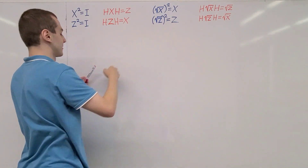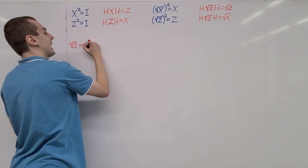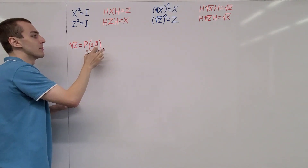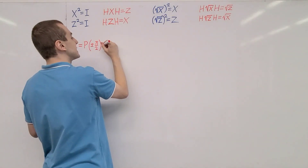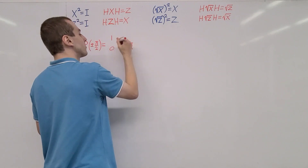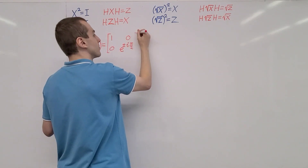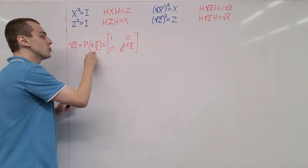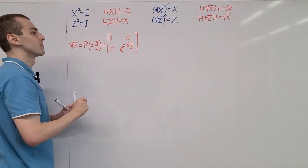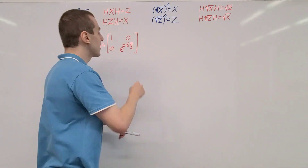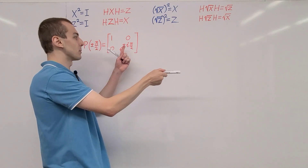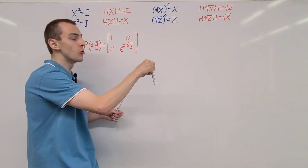So let's look at the square root of Z. We can write the root of Z as a phase shift gate evaluated at plus or minus pi over 2. As a matrix representation, this is a diagonal matrix with entries 1 and e to the plus or minus i pi over 2, with zero off-diagonal entries. We can evaluate e to the plus or minus i pi over 2 as plus or minus i, because on the unit circle this corresponds to a quarter cycle rotation — going up to plus i for the plus case and down to minus i for the minus case.